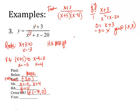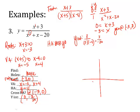For the y-intercept, I put zeros in for every x: (0 + 3) over (0 + 5)(0 − 4) gives 3 over (5 × −4) = 3 over −20. So the y-intercept is at (0, −3/20) — a very tiny negative number. Now let's assemble the graph: vertical asymptotes at x = −5 and x = 4, horizontal asymptote at y = 0, root at (−3, 0), no holes. The curve crosses the asymptote at (−3, 0), which is also the root, and the y-intercept is just below the asymptote.